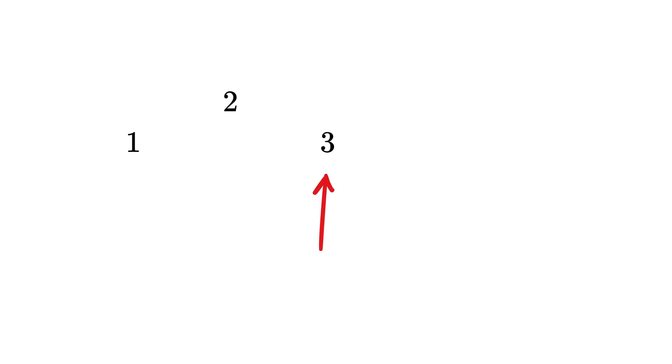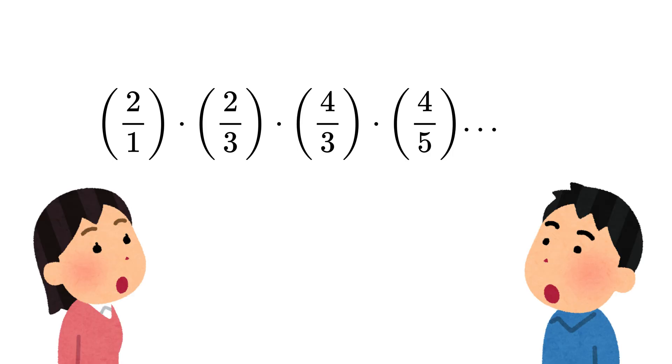Write 1, then 2, then 3, then 4, and so on like this forever. Similarly, start from 2 and then write 3, then 4, then 5, and so on like this forever. Now just divide these two numbers, then these two, then these two, and so on. Now multiply all of them together like this.